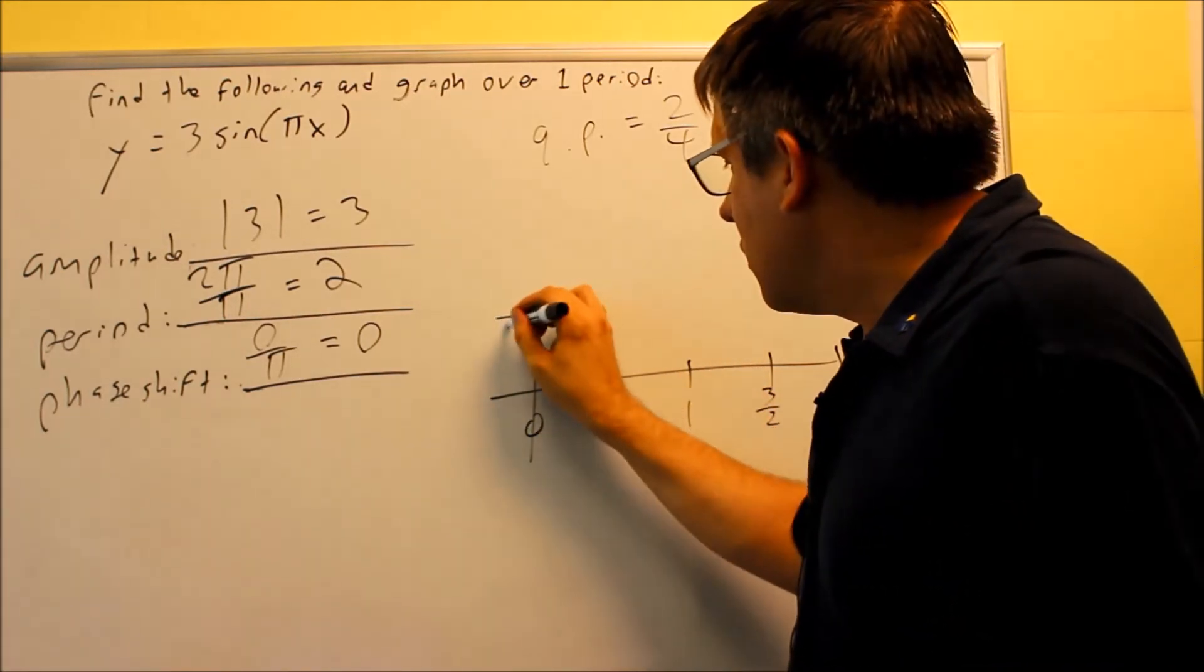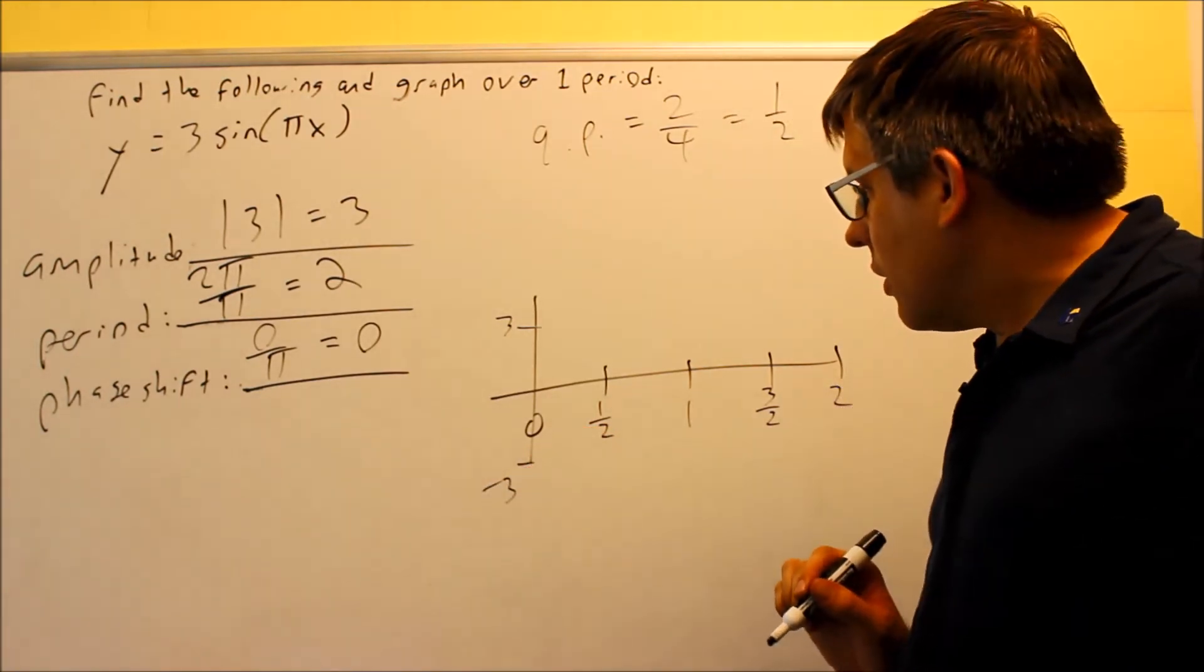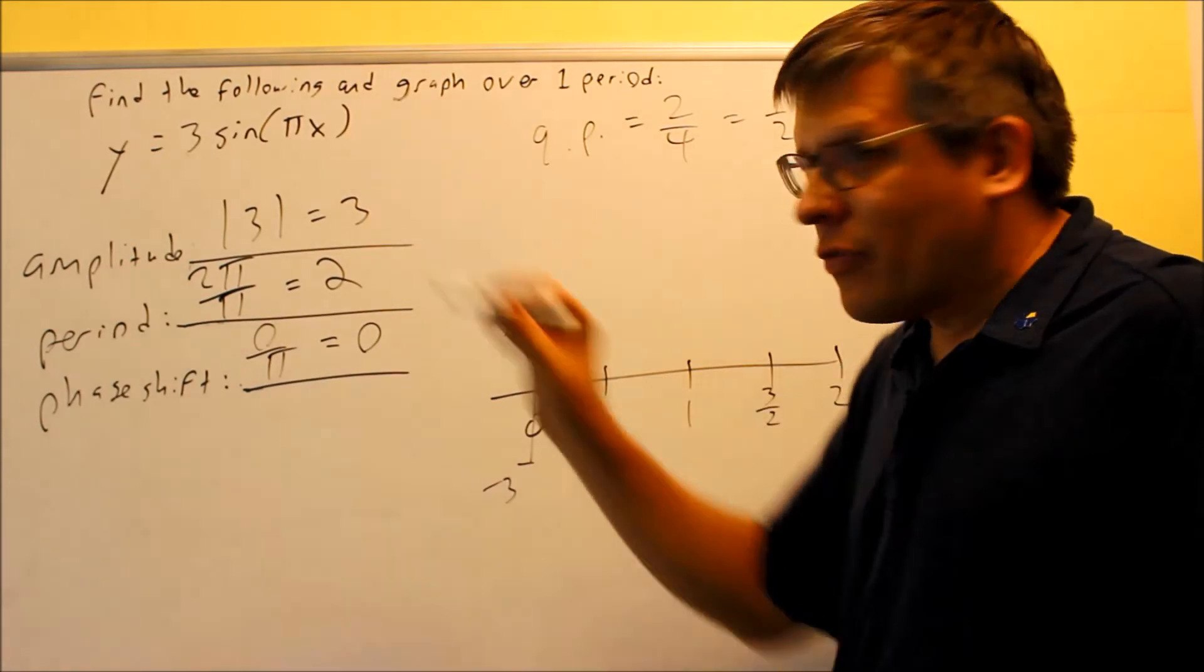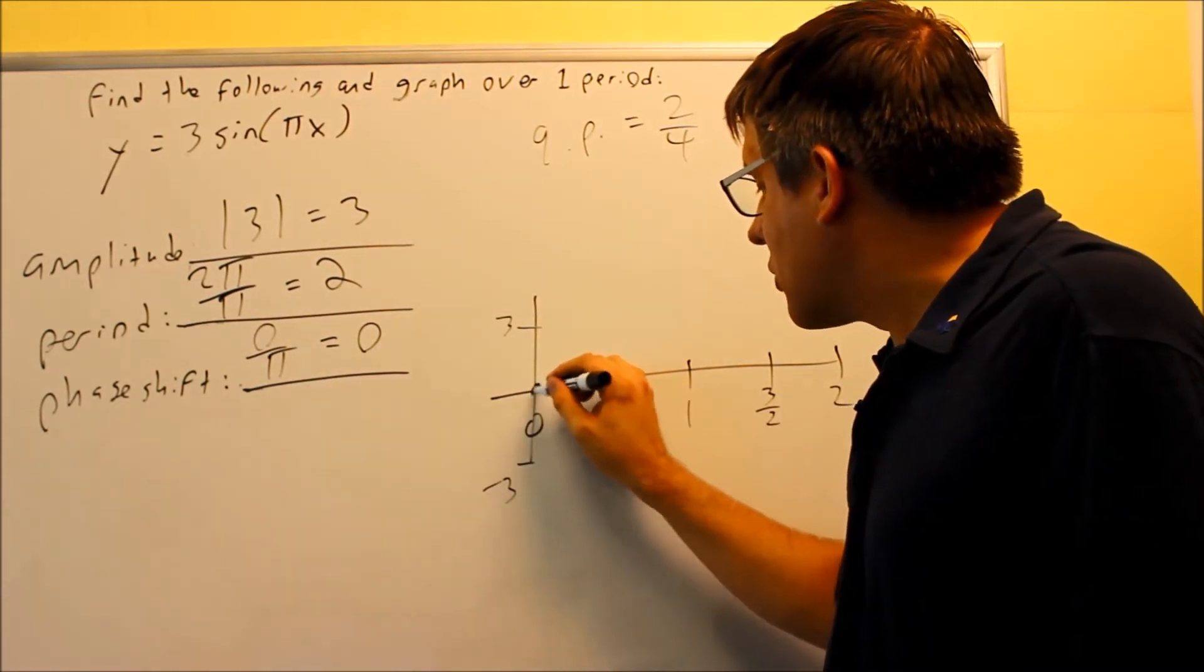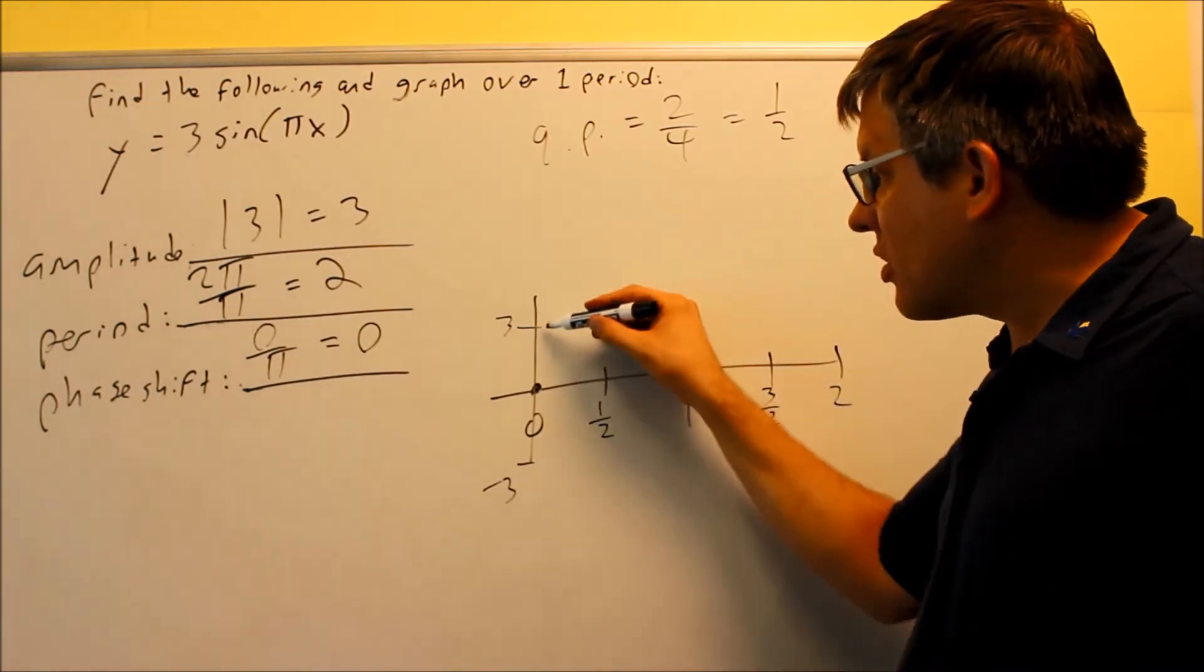My amplitude is 3, so I'll put 3 here and negative 3 down below there. And a sine graph, the sine graph always has to start on the x-axis, so I'm going to start it right there at 0, 0. If it was a cosine graph, I'd be starting it up here, but because it's a sine graph, sine graphs always begin on the x-axis.